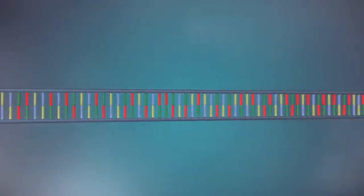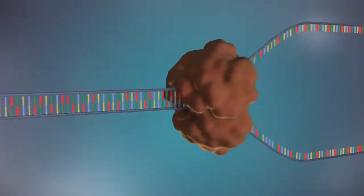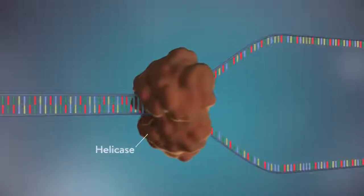The first step in DNA replication is to separate the two strands. This unzipping is done by an enzyme called helicase and results in the formation of a replication fork.